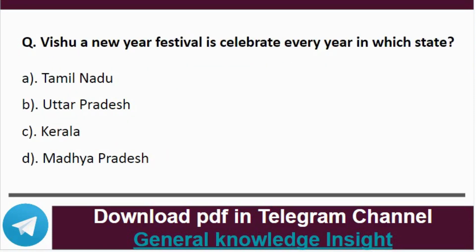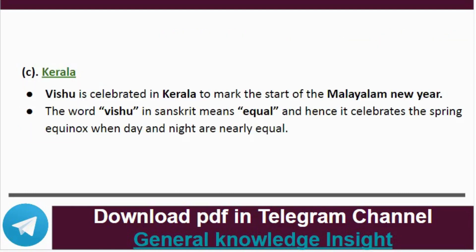Question 9: Vishu New Year festival is celebrated every year in which state? The correct answer is option C, that is Kerala. Vishu is celebrated in Kerala to mark the start of the Malayalam New Year. The word Vishu in Sanskrit means equal, and hence it is celebrated at the spring equinox when day and night are nearly equal.